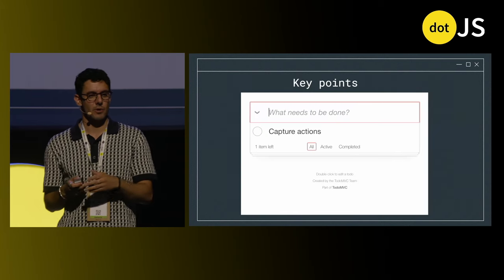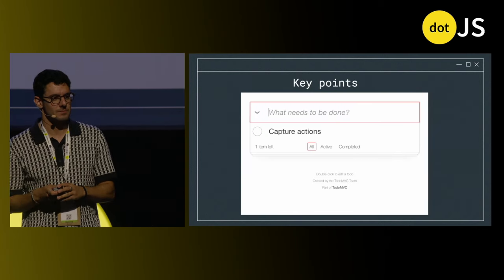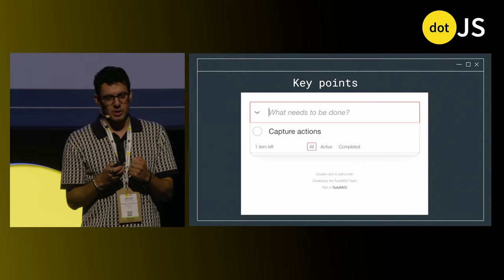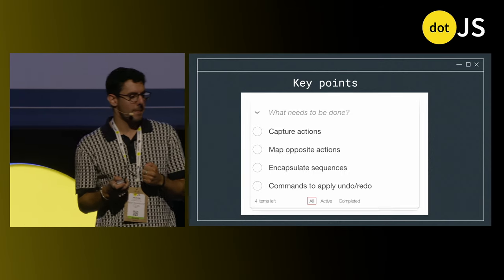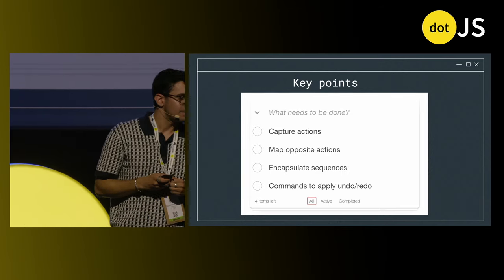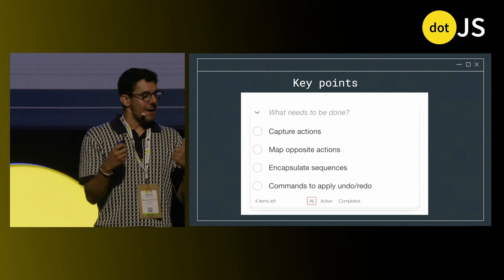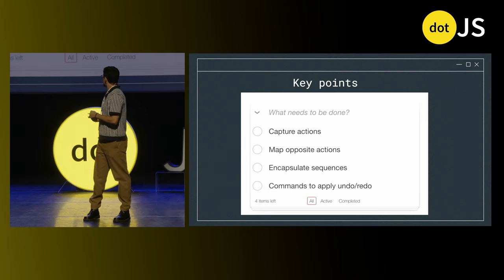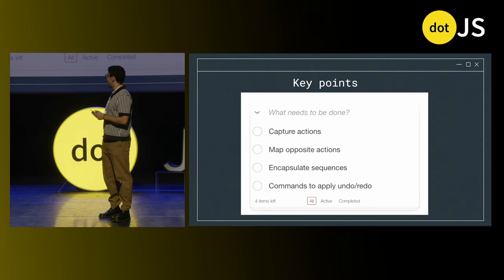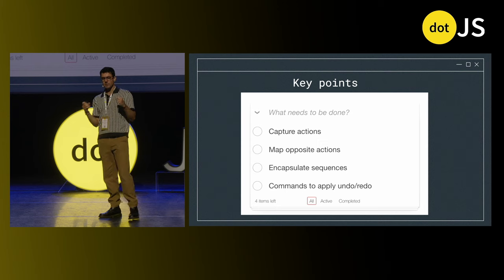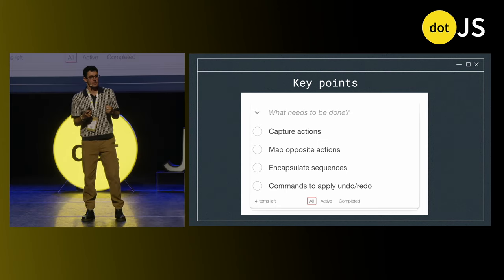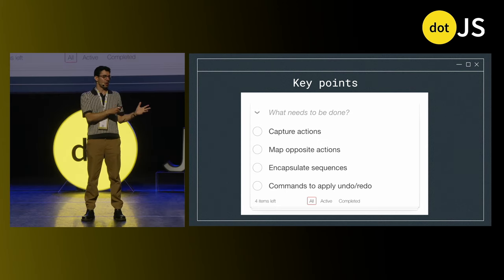So, what are the key points here? You have to capture your actions. Map each action to its opposite. Encapsulate the sequences. And create the commands to apply the undo and redo.